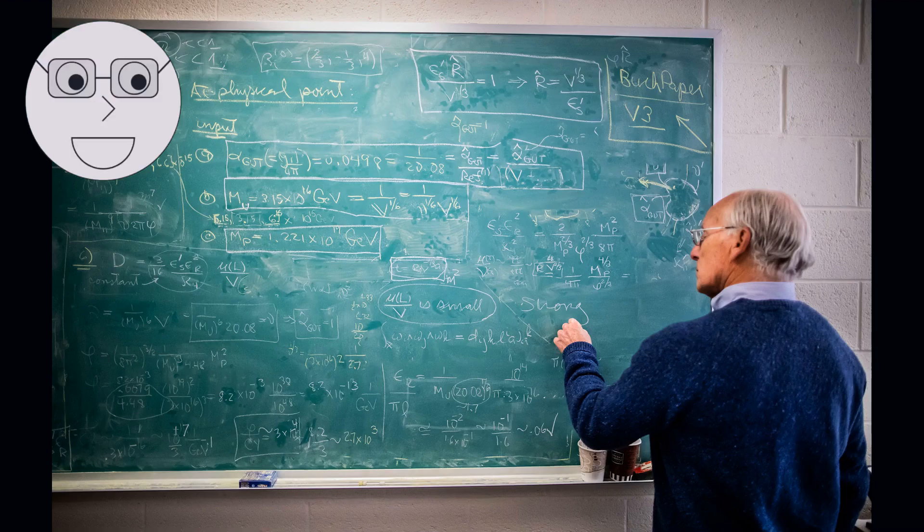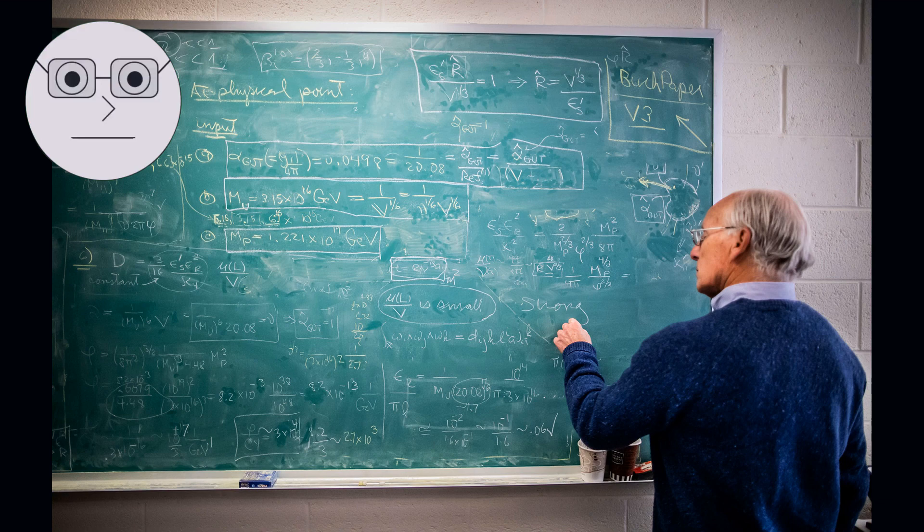In the 19th century, the development of calculus and differential equations led to the emergence of mathematical physics as a distinct field of study. The works of James Clerk Maxwell, who formulated the equations of electromagnetism, and Albert Einstein, who developed the theory of relativity, further advanced the field of mathematical physics.